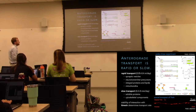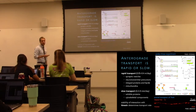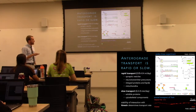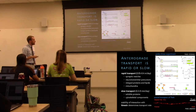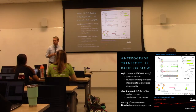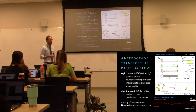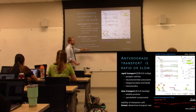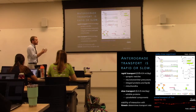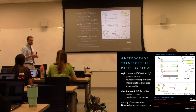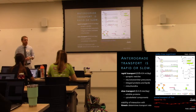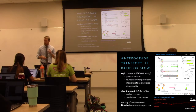Microtubules stay there all day for anterograde transport. Transport moves at different speeds: you can see fast anterograde here with these red neurotrophin receptors — specifically TrkA receptors that bind nerve growth factor — moving away from the cell body. Some move very quickly, some not as much. The stability of interaction with kinesin isn't constant — it still comes down to chance. Do you bump into kinesin and adapter proteins? How frequently do you fall off? That determines your rate.